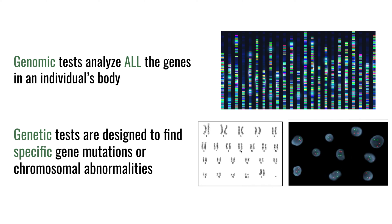So it's really talking about the same thing — it's just a difference of scale. There are probably about 30,000 to 40,000 genes, and often we're only concerned with a handful of them.